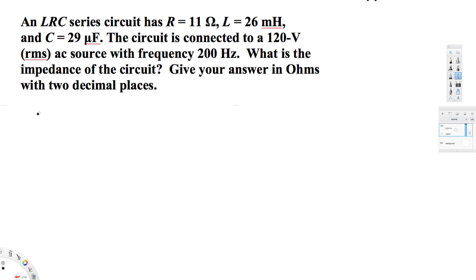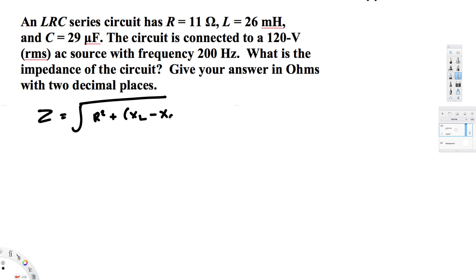To find the impedance we have to use this equation: Z is equal to the square root of R squared plus (XL minus XC) squared, where XL is the inductive reactance and XC is the capacitive reactance. We have the resistance provided, that is 11 ohms.